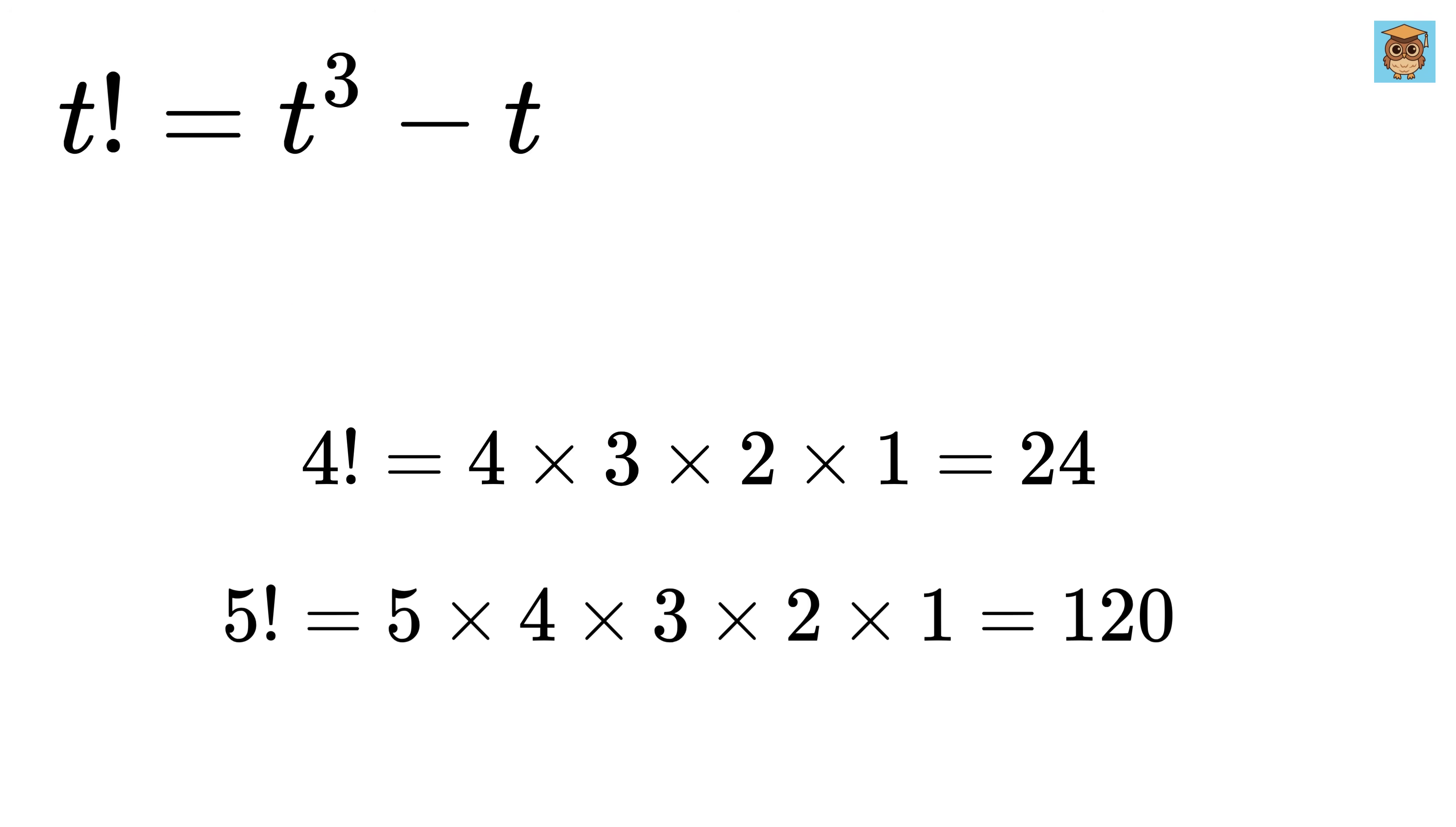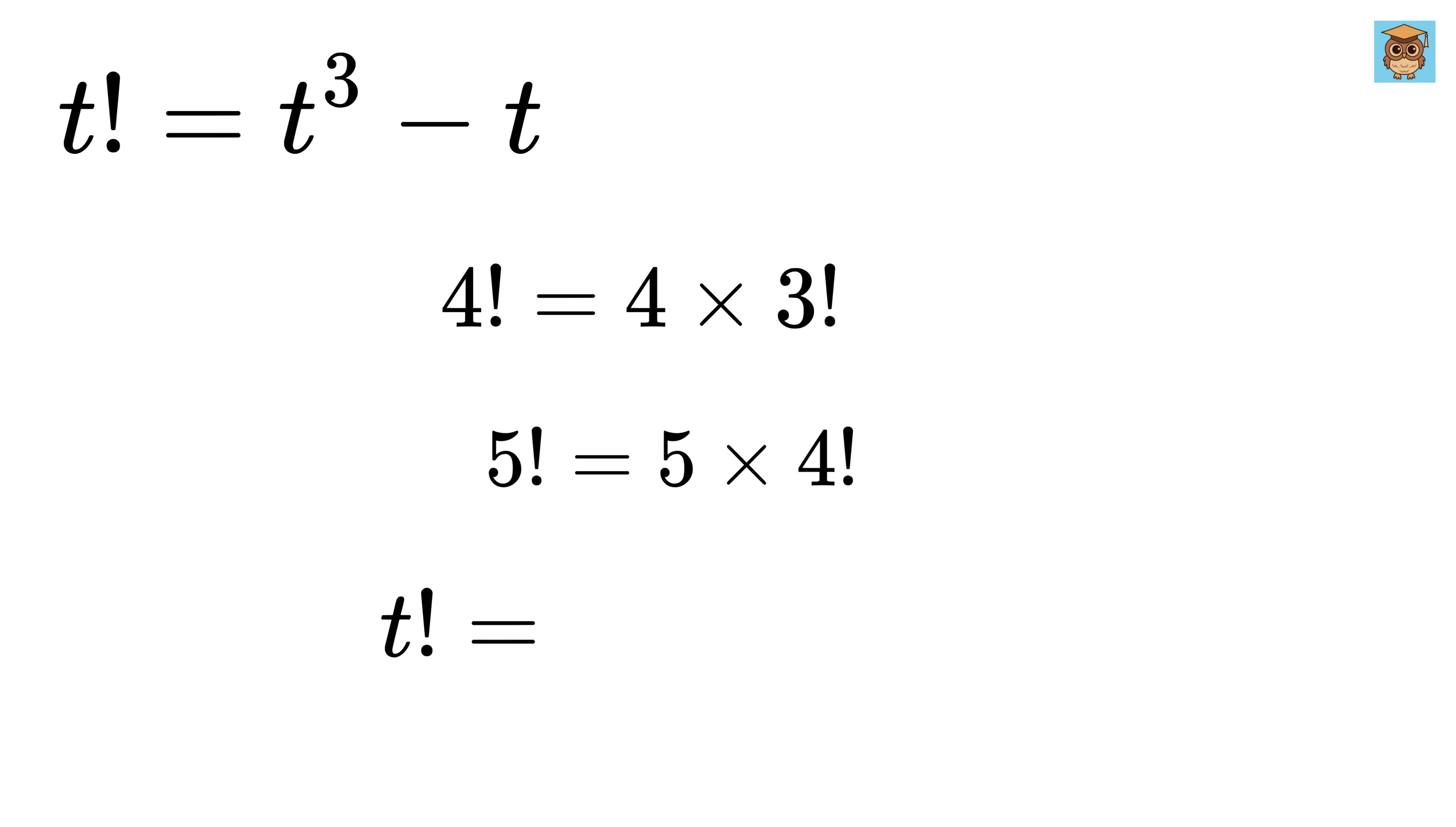Now here you can see that 4 factorial can also be written as 4 times—this is the same as 3 factorial. Similarly, 5 factorial can also be written as 5 times—this is the same as 4 factorial. So any t factorial can also be written as t times t minus 1 factorial.